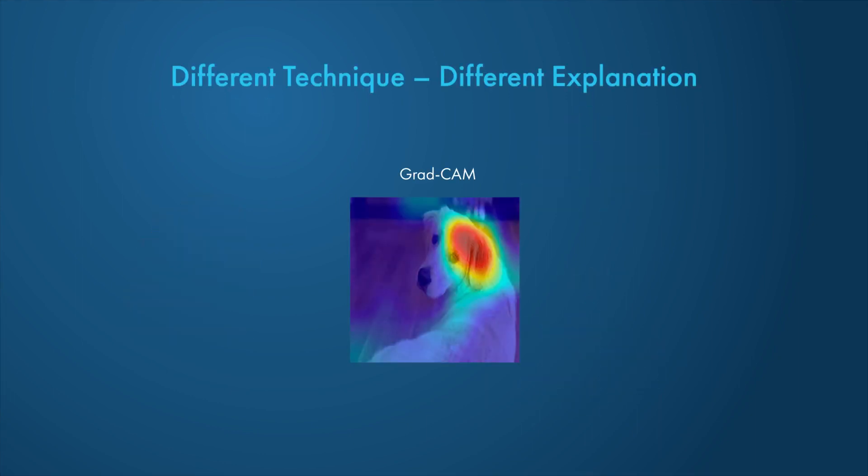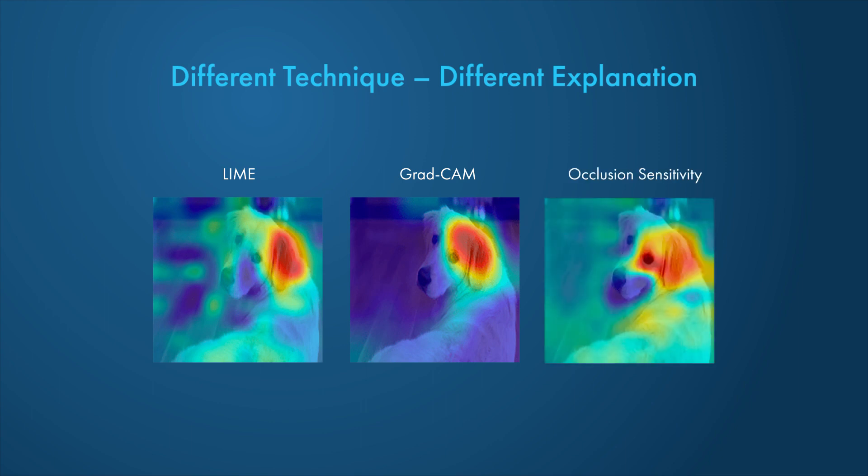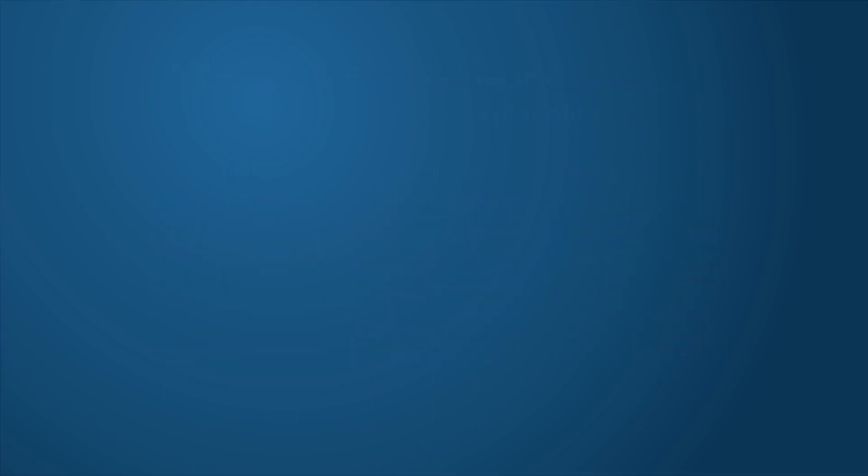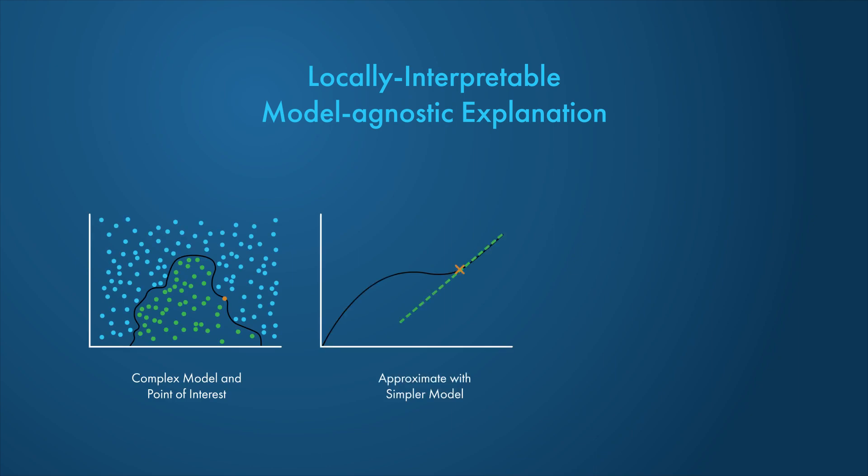You can observe in the explained image that the mapping of the most important features slightly differs between explainability techniques. This is because the underlying methodology is different. LIME approximates the behavior of a complex model by using a simpler, more interpretable model, such as a regression tree.